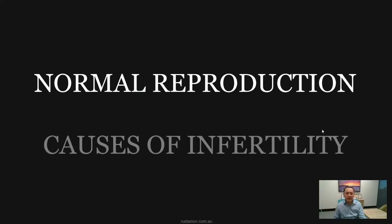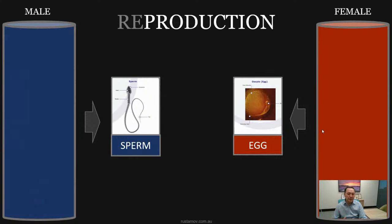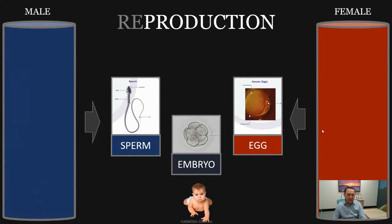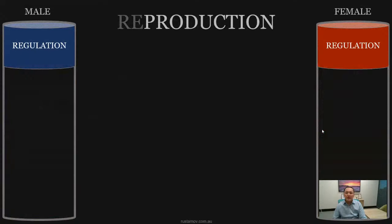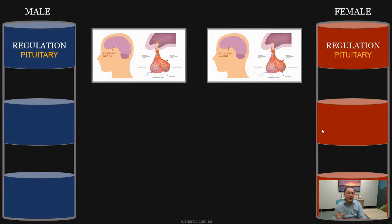Like its name suggests, reproduction involves production of male and female gametes, embryos, and offspring. Like any production process, reproduction requires regulation of the process, production of the gametes, and delivery of the gametes.